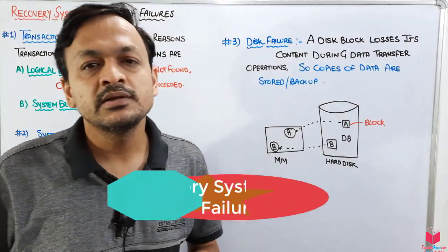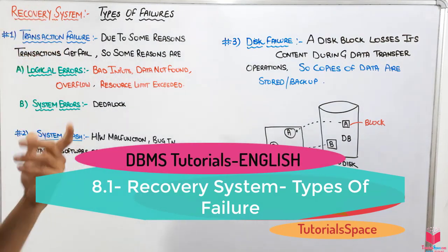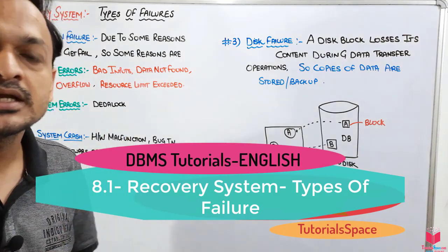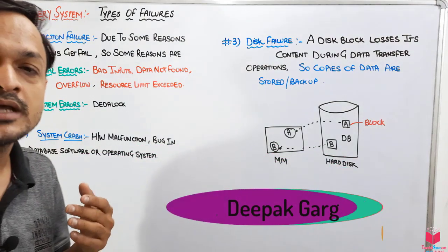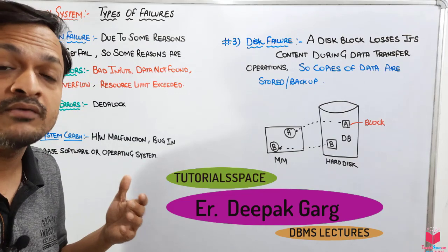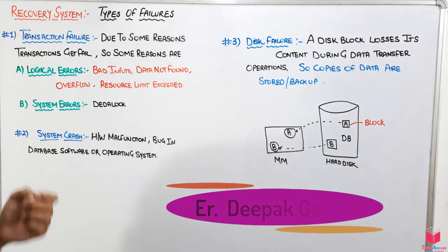Hello guys, today we will discuss our new section, it's a recovery system. It's a part of transaction under concurrency control. In this section we will discuss what are the different types of failures, errors, and how we can recover from those kinds of failures.